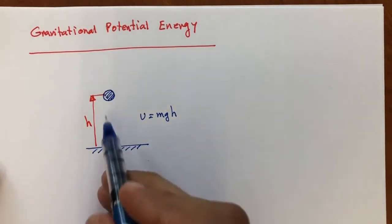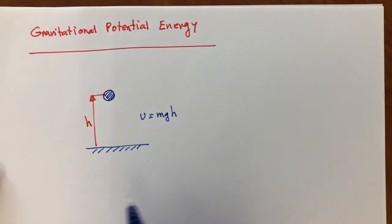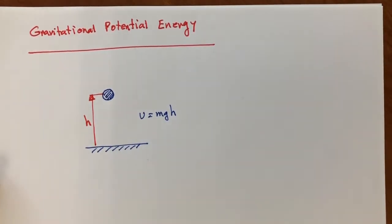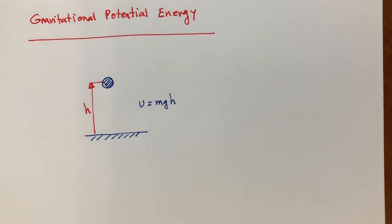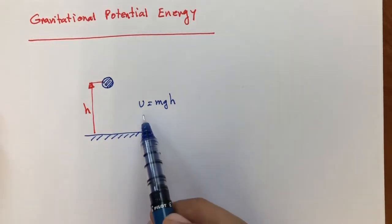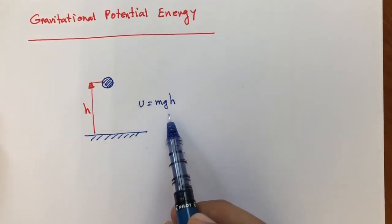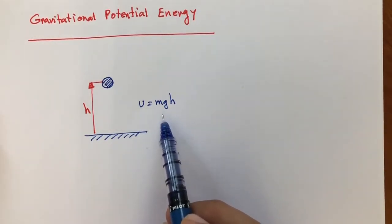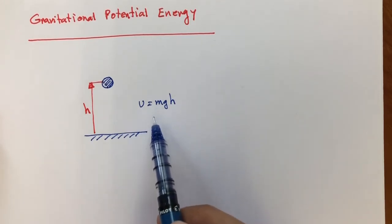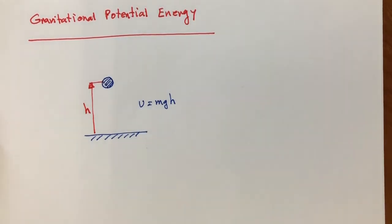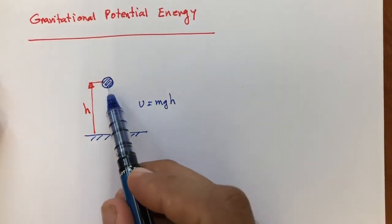If your mass is below the reference line, then the potential energy is going to be negative. It totally depends on where you are putting your reference line. The actual number of the potential energy doesn't really matter, but the change in potential energy is something which is important in our equations.